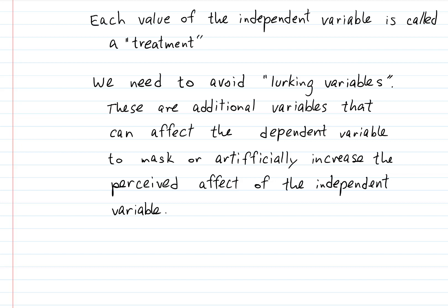It's impossible to entirely avoid all lurking variables, but we try to rule out as many as we can and minimize the ones we cannot rule out. One way of minimizing some lurking variables is what's called a control group.